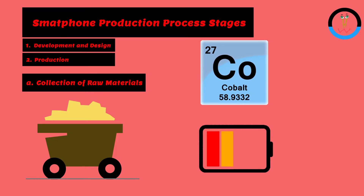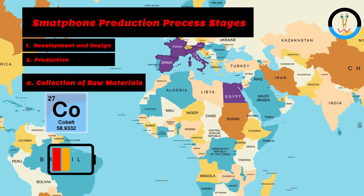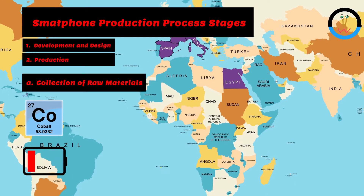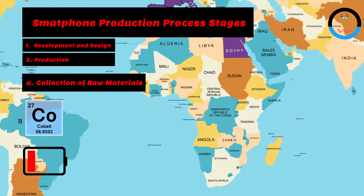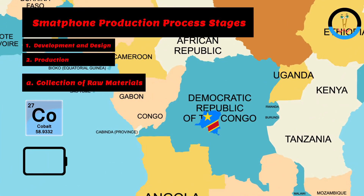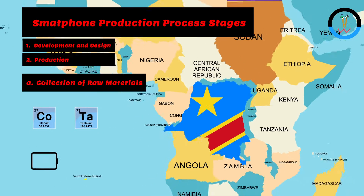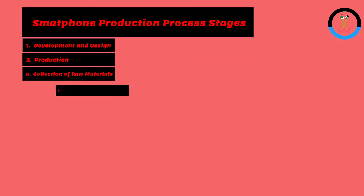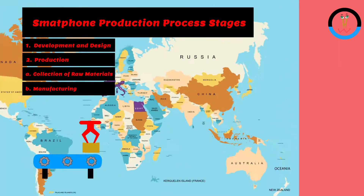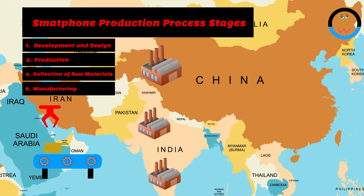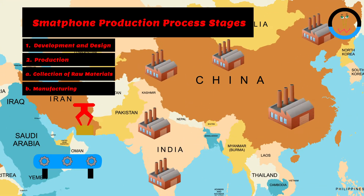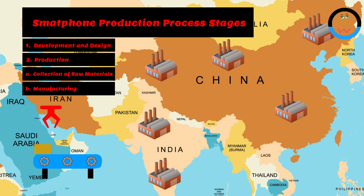Cobalt is used for powerful batteries. The largest cobalt manufacturer by far is the Democratic Republic of Congo. Large amounts of tantalum are also sourced in the Congo. The production of individual components and assembly is mostly done at factories in China and India. These factories are run by companies like Flextronics, Southcom, and Foxconn.